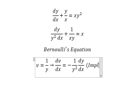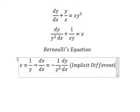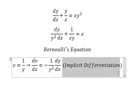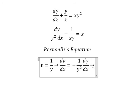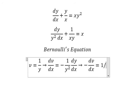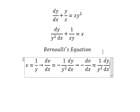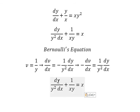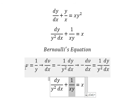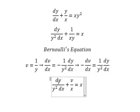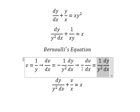This is about implicit differentiation. We don't have the negative on one side, so we put the negative on the left. Now we need to change everything: 1 over y we replace with v, and we replace the corresponding term with negative dv over dx.